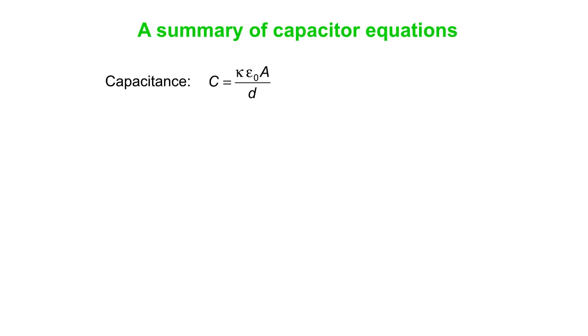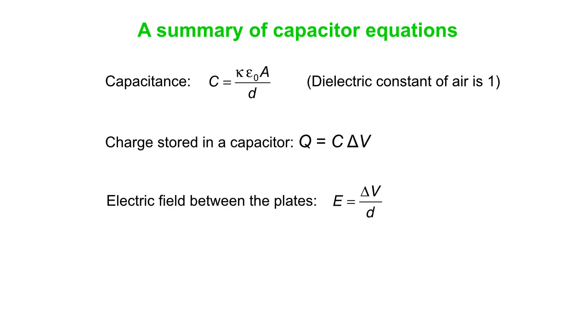So let's just summarize all these equations. We've got our capacitance equation. Dielectric constant of air is close enough to one. Vacuum is one. Air is just a little tiny bit higher than one. Charge stored, Q is C delta V. Electric field, E is delta V over d, or delta V is E times d. And energy stored, three equivalent equations. So that's it for our introduction to the capacitor.